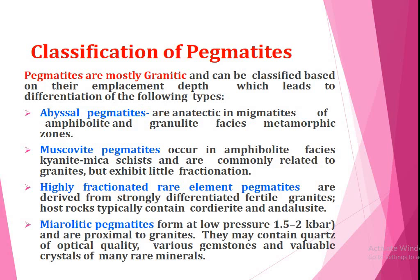Now, classification of pegmatites. Pegmatites are mostly granitic and can be classified based on their emplacement depth, which leads to differentiation of the following types. The first one is abyssal pegmatites, which are anatactic in origin and occur in amphibolite and granulite facies metamorphic terrains.